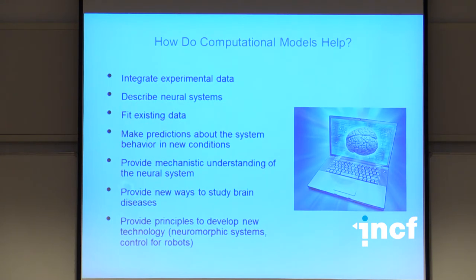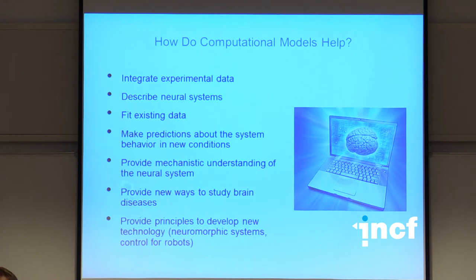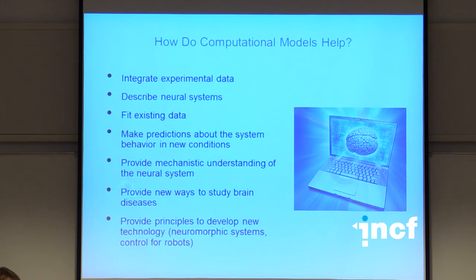How do computational models help? I consider computational models of neural systems to already be a sort of database — even without predictive capability, they integrate experimental data and make it easier to see relationships between different elements in a neural system. They describe neural systems and fit existing data. They make predictions if the model is good. They provide mechanistic understanding of the neural system, hopefully more ways to study diseases, and they provide principles to develop new technology in engineering.